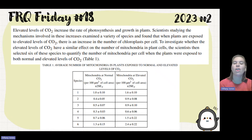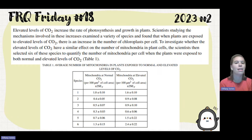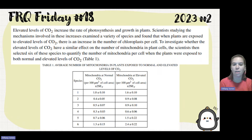Elevated levels of carbon dioxide increase the rate of both consistent growth in plants. Scientists studied the mechanisms involved in these increases, examined a variety of species, and found that when plants are exposed to elevated levels of carbon dioxide, there is an increase in the number of chloroplast cells. To investigate whether elevated carbon dioxide levels have a similar effect on the number of mitochondria in plant cells, scientists selected six species to quantify mitochondria per cell at normal and elevated levels.